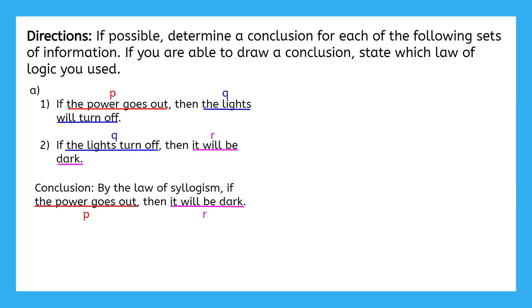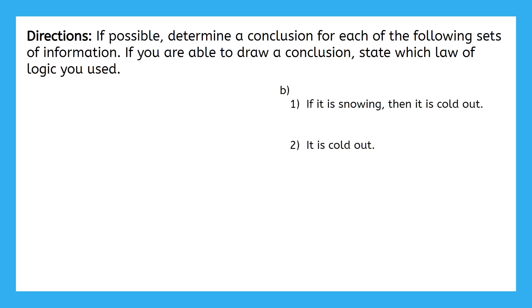The rest of the parts of this problem would be best approached with a similar strategy. Try part B next. Hmm. Our first statement is P implies Q, and our second statement is Q. Well, that's definitely not the law of syllogism because there's no R. And that's also not the law of detachment because the second statement is Q, not P like it's supposed to be. So, what do we do here?